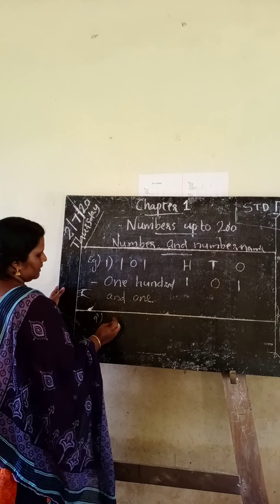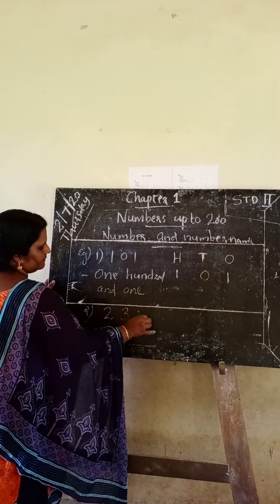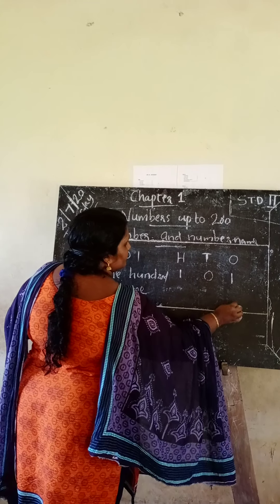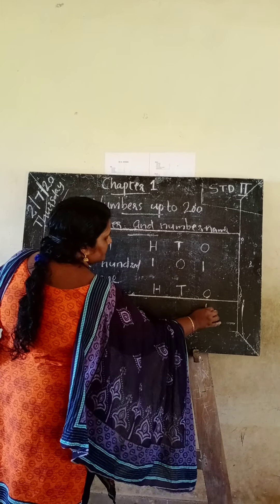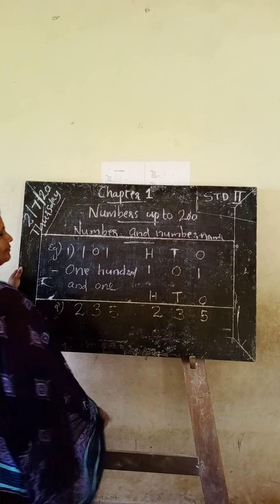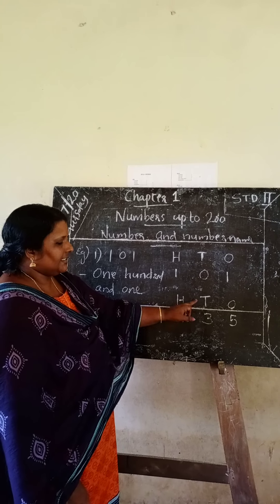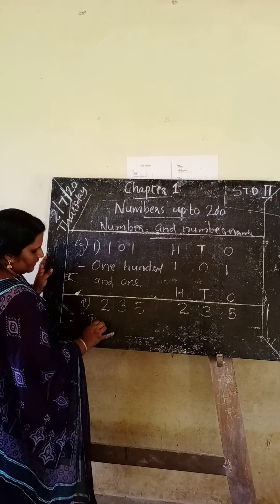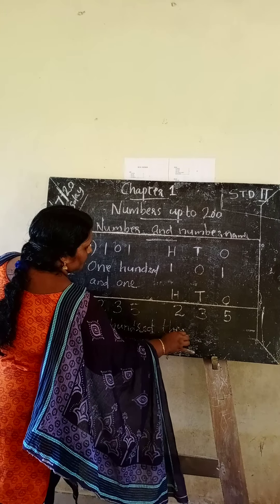Next example: 235. 2, 3, 5 is represented in a place value chart. 5 is in the place of 1, 3 is in the place of 10, and 2 is in the place of 100. So this number is read as two hundred and thirty-five.